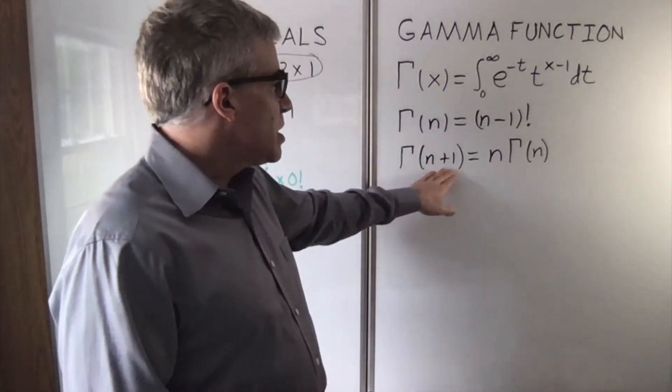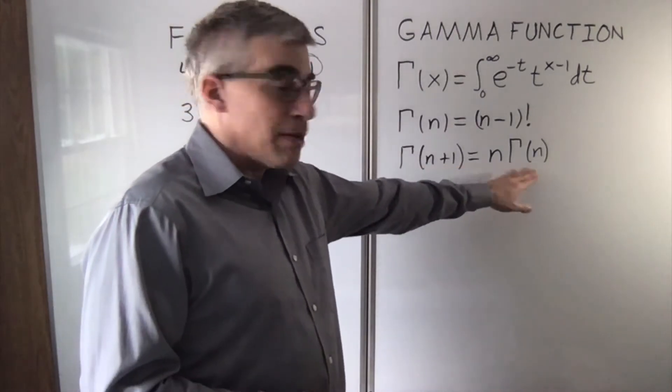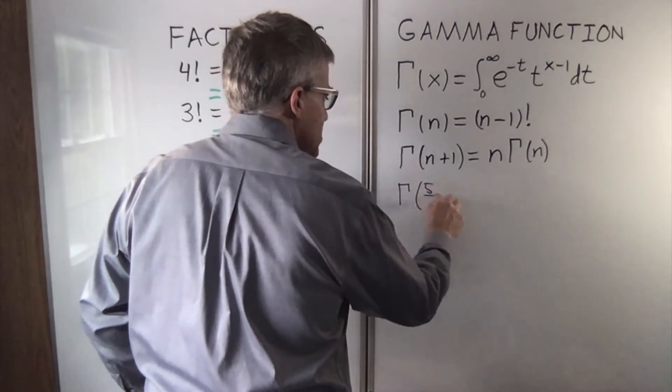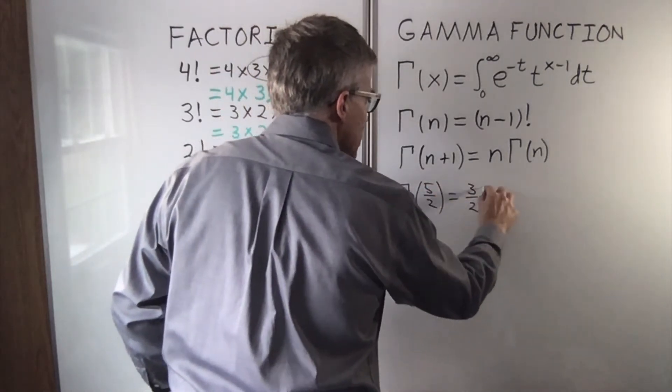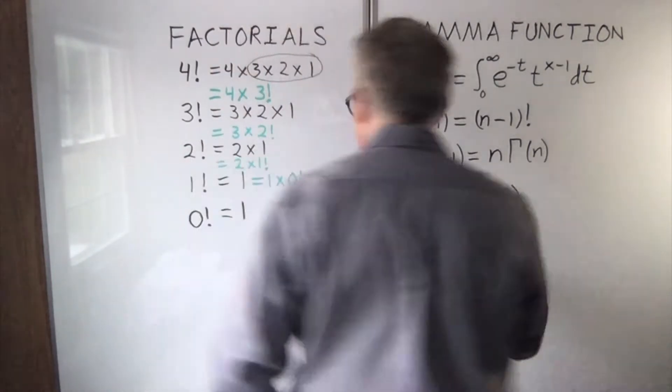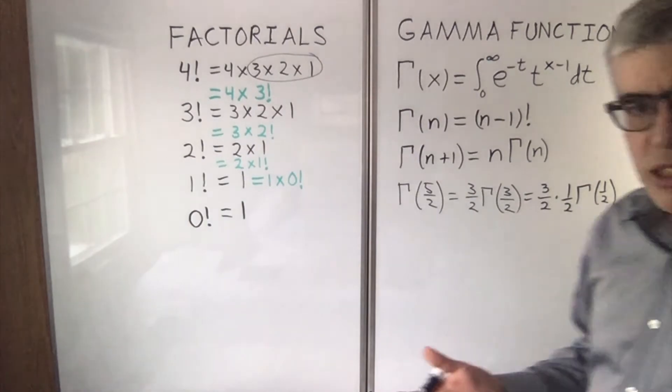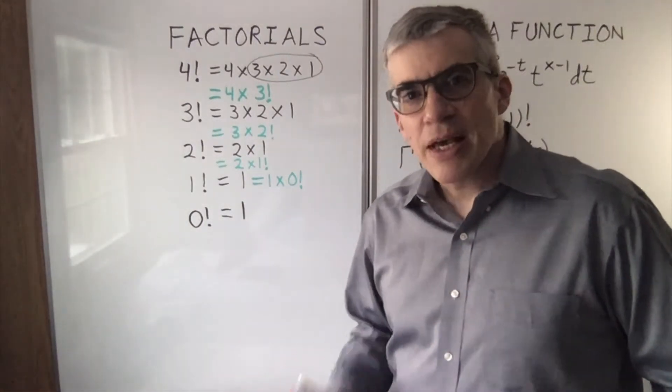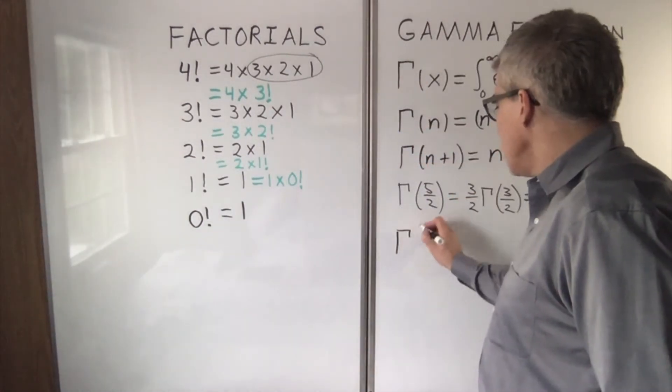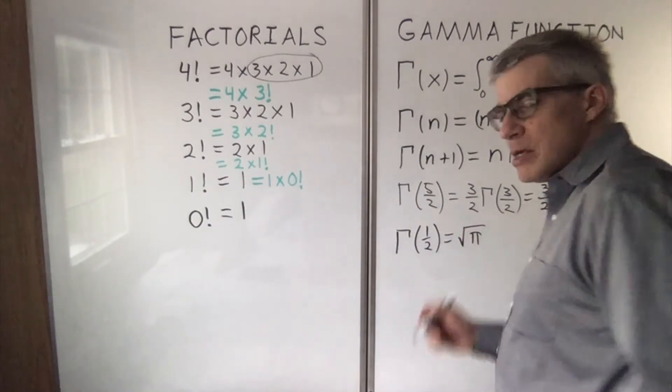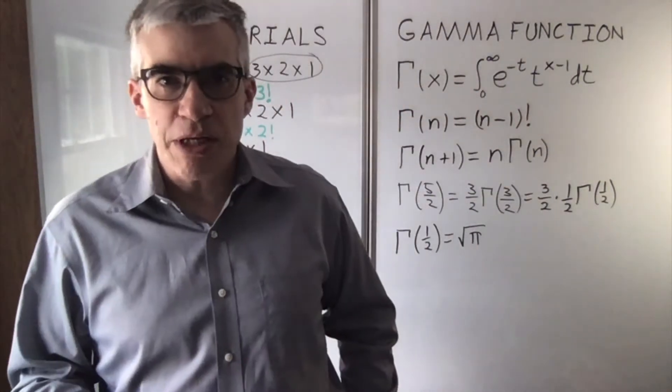Gamma of n plus 1 is n times gamma of n, which means if I want to know what's gamma of 5 halves, that would be 3 halves gamma of 3 halves. What's gamma of 3 halves? It would be 1 half gamma of 1 half. Well that's nice, but what's gamma of 1 half? It turns out gamma of 1 half is the square root of pi. There's a very clever integral that can be done to prove that.